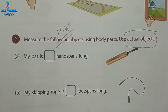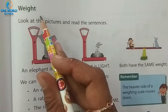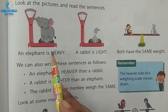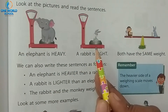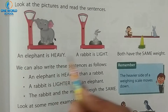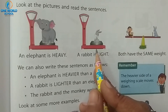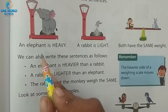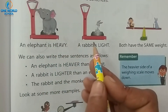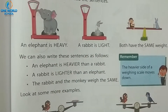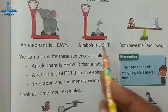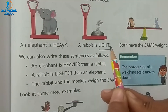Now take the next page. Look at the pictures and read the sentences. Elephant and rabbit — who is more heavy? Elephant is heavy and rabbit is light. An elephant is heavier than a rabbit, and a rabbit is lighter than an elephant.